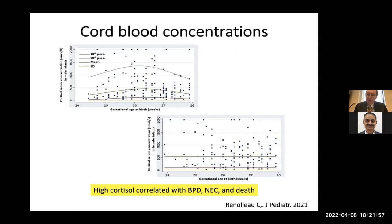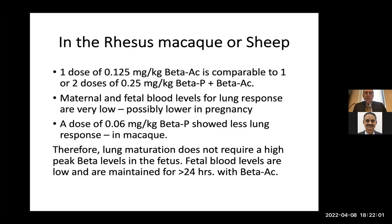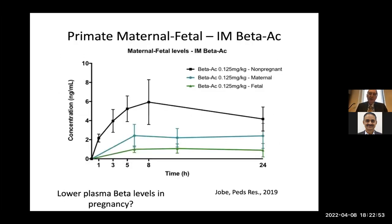A dose of 0.125 mg/kg of beta acetate is half of the dose women get with conventional dosing — a low dose. Maternal and fetal blood levels for lung response are very low, less than 1 nanogram per milliliter. A dose of 0.06 mg of beta phosphate showed less lung response in a macaque monkey, therefore lung maturation does not require a high peak level of steroid. Fetal beta or dex levels are low and need to be maintained for 24 hours with beta acetate.